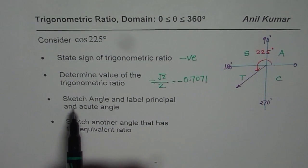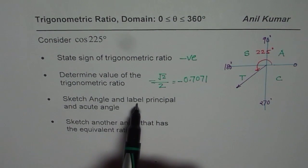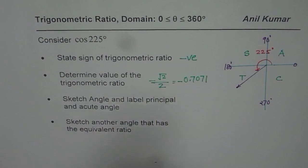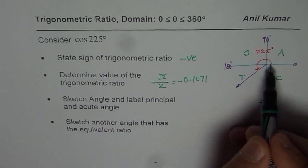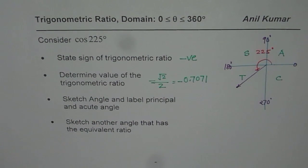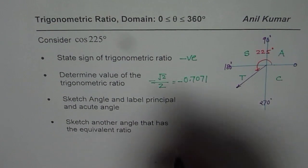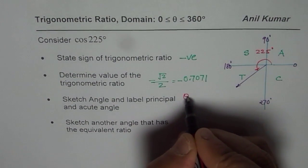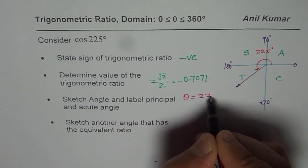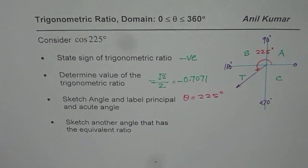Now, next part is sketch angle and label principal and acute angle. We have already sketched the red arrow shows the principal angle. So, we have here the principal angle, which is for us theta, equals to 225 degrees.